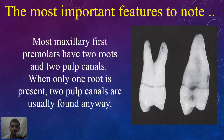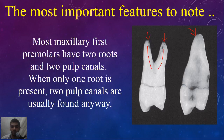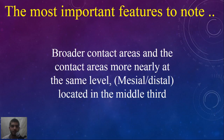Another note: most of the maxillary first premolars have two roots and two pulp canals. When only one root is present, two pulp canals are usually found anyway. So even if there is one root, there are mostly two pulp canals.